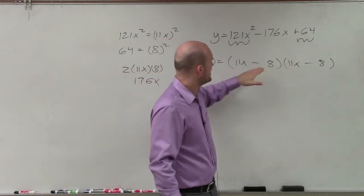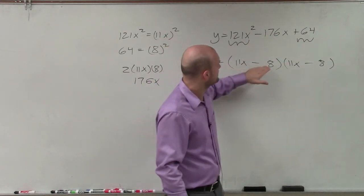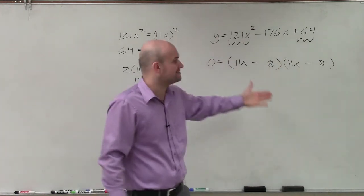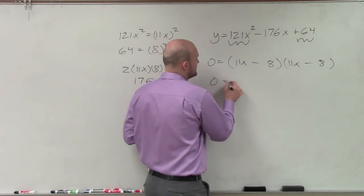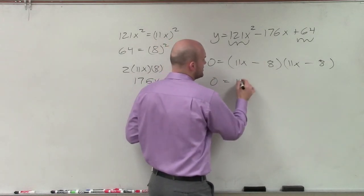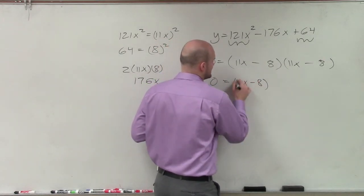However, when we multiply a negative times a positive and add it to another negative times a positive, that's going to give us a negative middle term. So now to continue solving, I can rewrite this as a binomial squared. So 11x minus 8 squared.